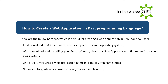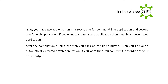How to create a web application in Dart? First, download Dart software supported by your operating system. After installing, choose a new application from the file menu, write a web application name, and set a directory to save it. You will see two radio buttons: one for a command-line application and one for a web application — select web application. Click the finish button and a web application will be automatically created, which you can edit as desired.